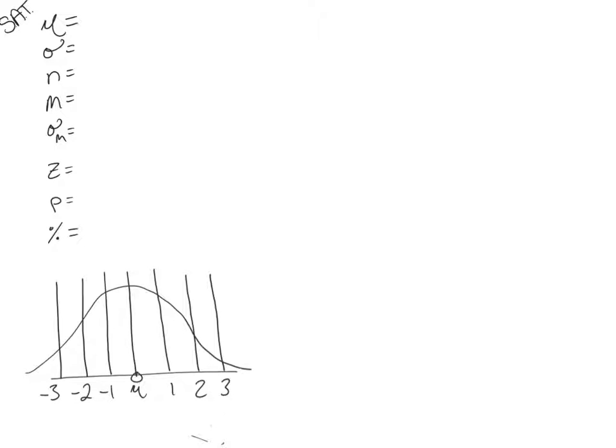We're going to say that the SAT scores form a normal distribution with a μ of 500 and a standard deviation of 100.